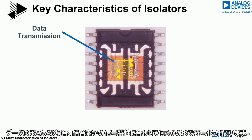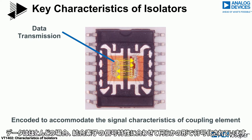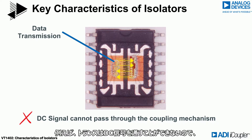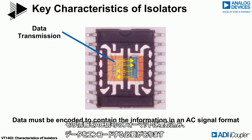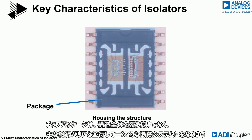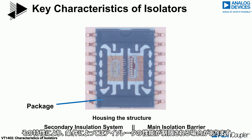Data is almost always encoded in some fashion to accommodate the signal characteristics of the coupling element. For example, transformers cannot pass a DC signal, so the data must be encoded to contain that information in an AC signal format. The chip package houses the entire structure but also becomes a secondary insulation system in parallel with the main isolation barrier, and its characteristics may limit the performance of the isolator in certain conditions.